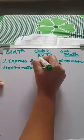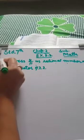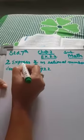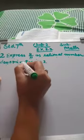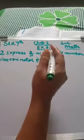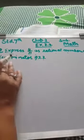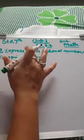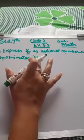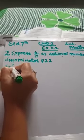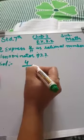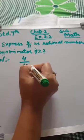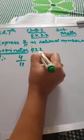Next, sum number 2 of Exercise 2.2. Students, we will express 4 over 11 as a rational number with the denominator 22. Now we have to convert our denominator. The denominator here is 11 and we have to convert that into 22. The fraction given is 4 over 11, and I have to convert my denominator into 22.